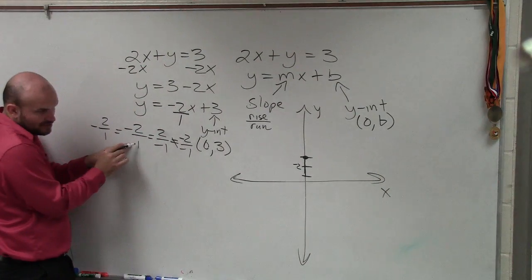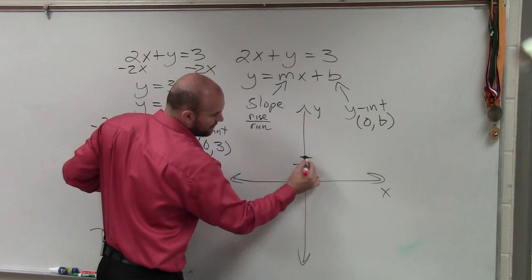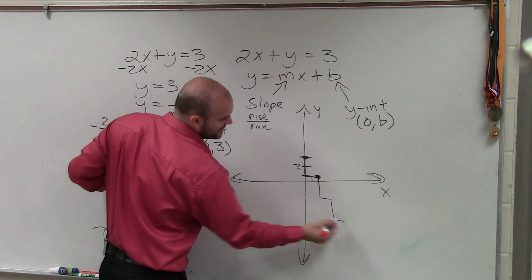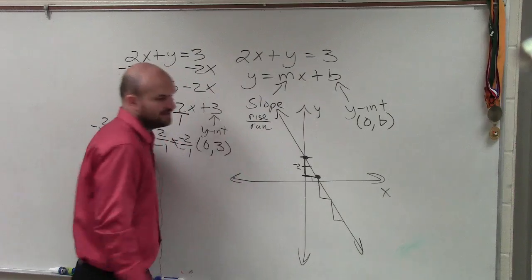Then the change in the x-coordinates is positive 1. So down 2 over 1. That's my next point. And you can continue that process as many times as you want. But you only need to do it once. And there's your graph.